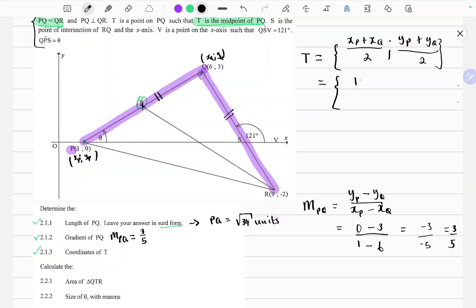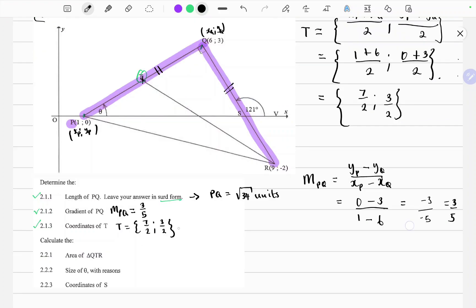So we can just substitute the coordinates respectively. XP is 1 plus 6 over 2 and YP is 0 plus 3 over 2. So this should give us 7 over 2 and 3 over 2. And in a decimal format it can be written as 3 and a half and 1 and a half. So you can write the coordinates for the midpoint in fraction format or in decimal format.